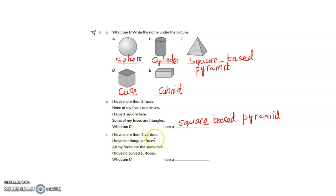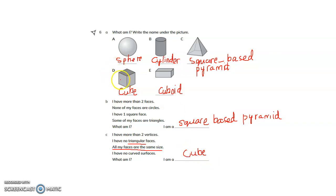I have more than 2 vertices. I have no triangular faces. All my faces are the same size. I have no curved surface. What am I? No triangular faces, so it is not a pyramid. All my faces are the same size, so it is a cube — all sides equal length with 6 faces in a 3-dimensional shape. So it is a cube.